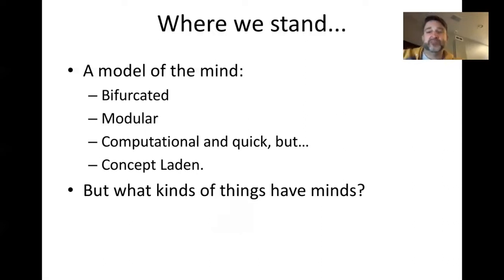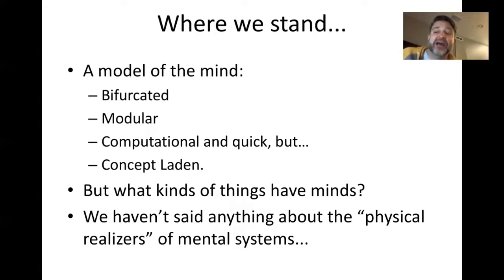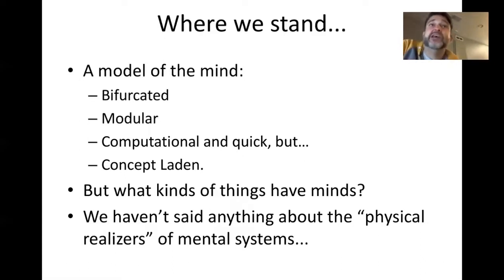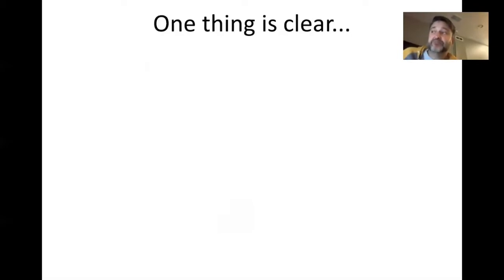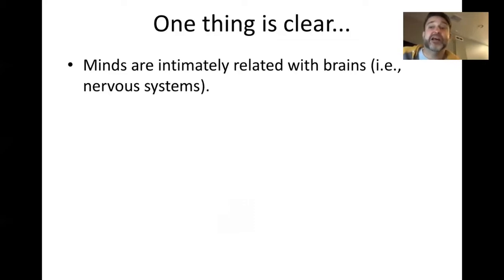Our discussion for today is: what does it take to have a mind? We haven't said anything about the physical realizers of mental systems. Does it require a certain kind of body to have a mind? Well, one thing is clear that we can say about the relationship between minds and physical realizers, and that is that minds are intimately related with brains — and by brains, I mean nervous systems. So we have a brain composed of various neurons, which are themselves nerves.